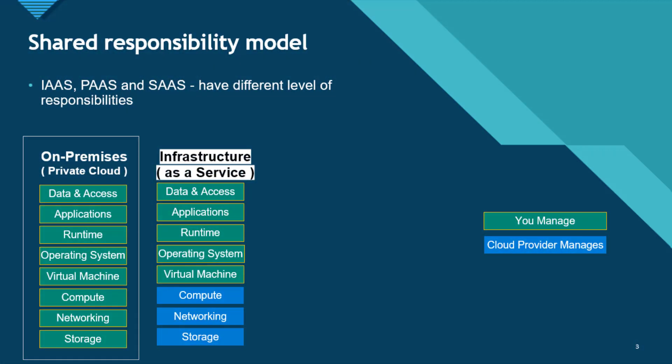Let's look at the next block: IaaS, which stands for Infrastructure as a Service. IaaS is similar to how we do virtualization. The difference is that the infrastructure is not yours — it belongs to the cloud provider, Microsoft in this case. We can use this platform to set up virtual machines and have control over what we install on that virtual machine.